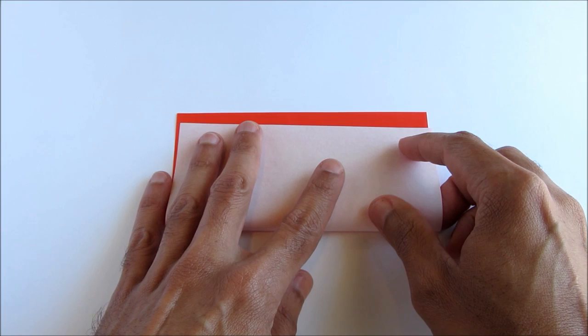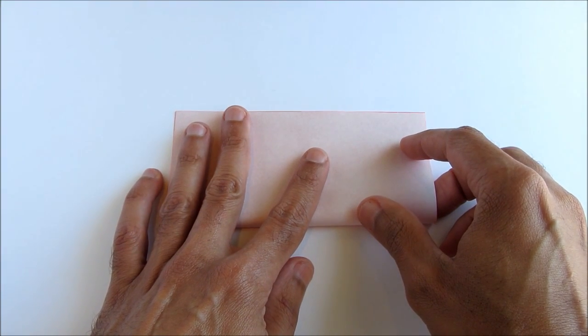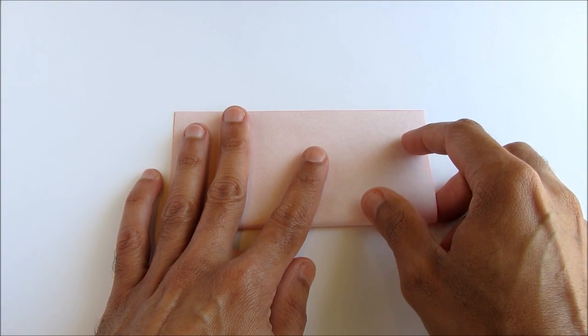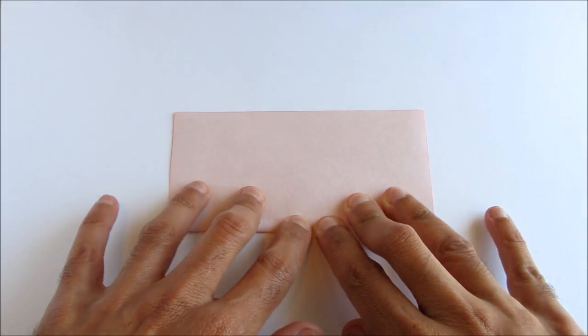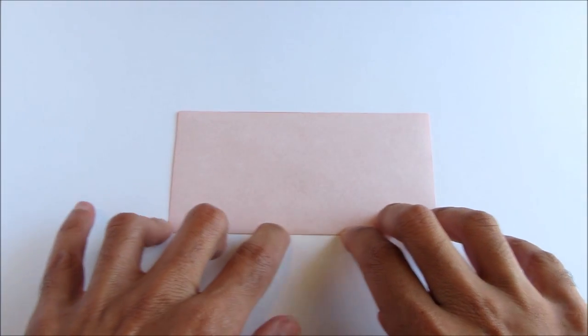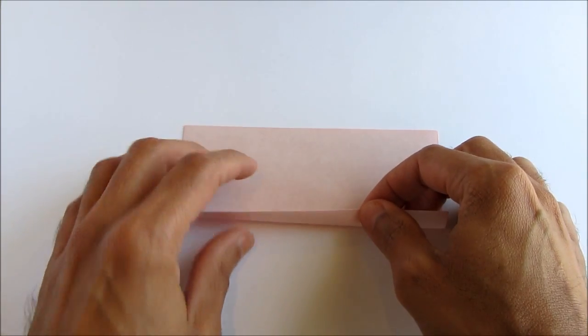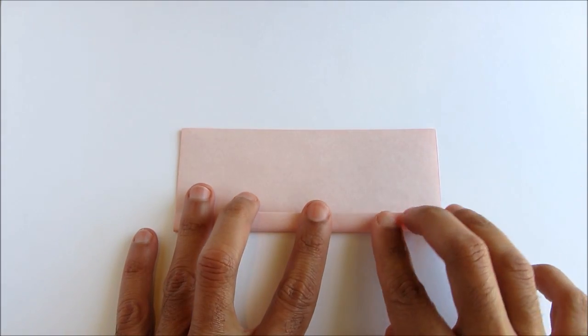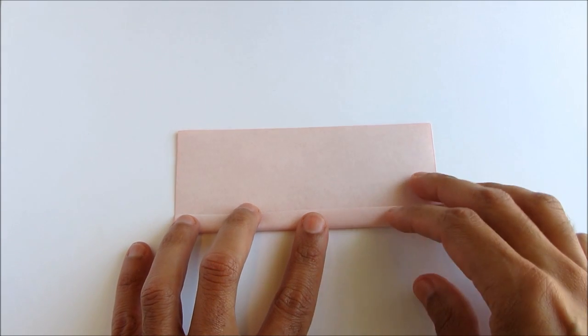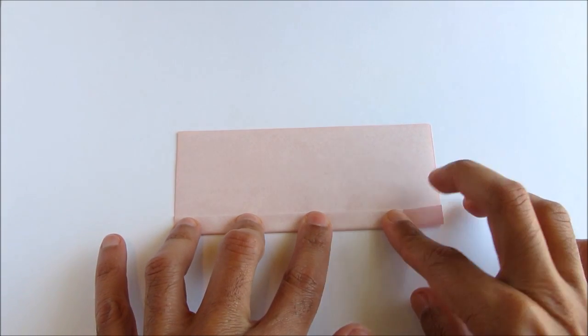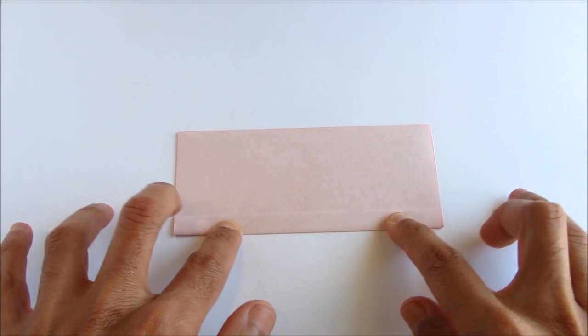Make a valley fold along the east-west line as we're showing here. Then fold the bottom edge of the paper upwards, about 1cm. And again, crease that well.